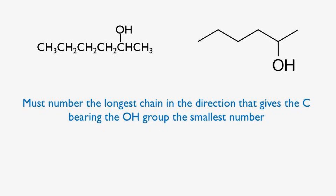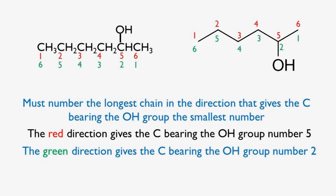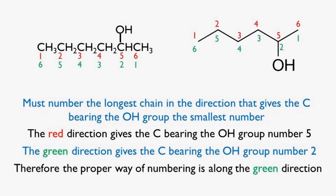Rule number one. First, we must number the longest chain in a direction that gives the carbon bearing the OH group the smallest number. The red direction gives the carbon bearing the OH group number 5, whereas the green direction gives the carbon bearing the OH group number 2. Therefore, the proper way of numbering is along the green direction.